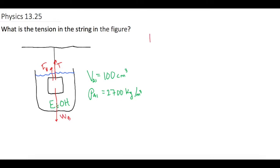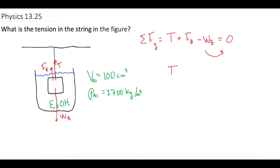So now if we sum our forces on the block, we get T in the positive y-direction plus the buoyant force in the positive y-direction minus the weight is equal to zero, because it's not accelerating in the y-direction. If we add the weight over to the other side, we find that tension plus the buoyant force are equal to the weight.